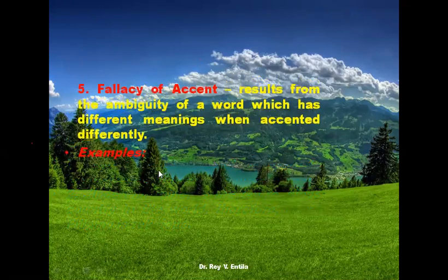The fallacy of accent results from the ambiguity of a word which has different meanings when accented differently — the way of pronouncing it changes the meaning. For example, the word 'present': accented on the first syllable — 'PREsent' — it is a noun meaning a gift, like the presents of the three wise men to Jesus. Accented on the second syllable — 'preSENT' — it is a verb meaning to introduce or to show.